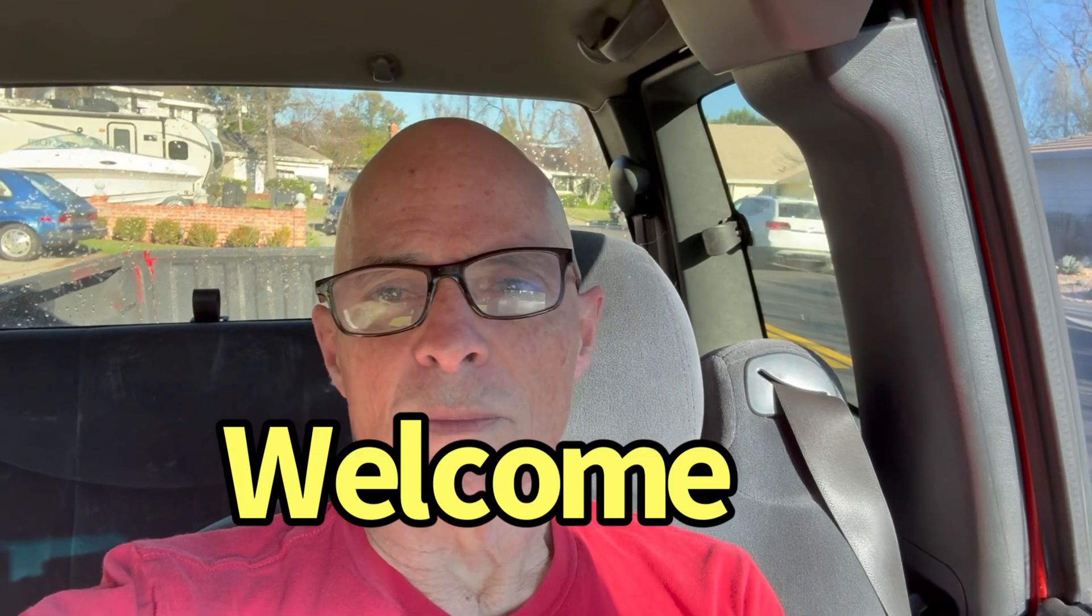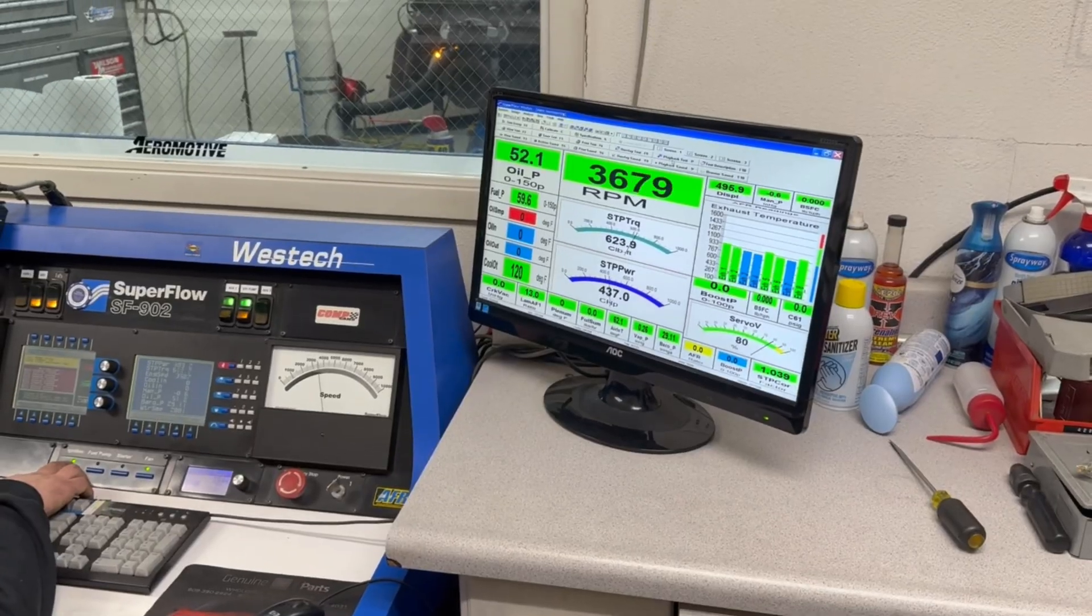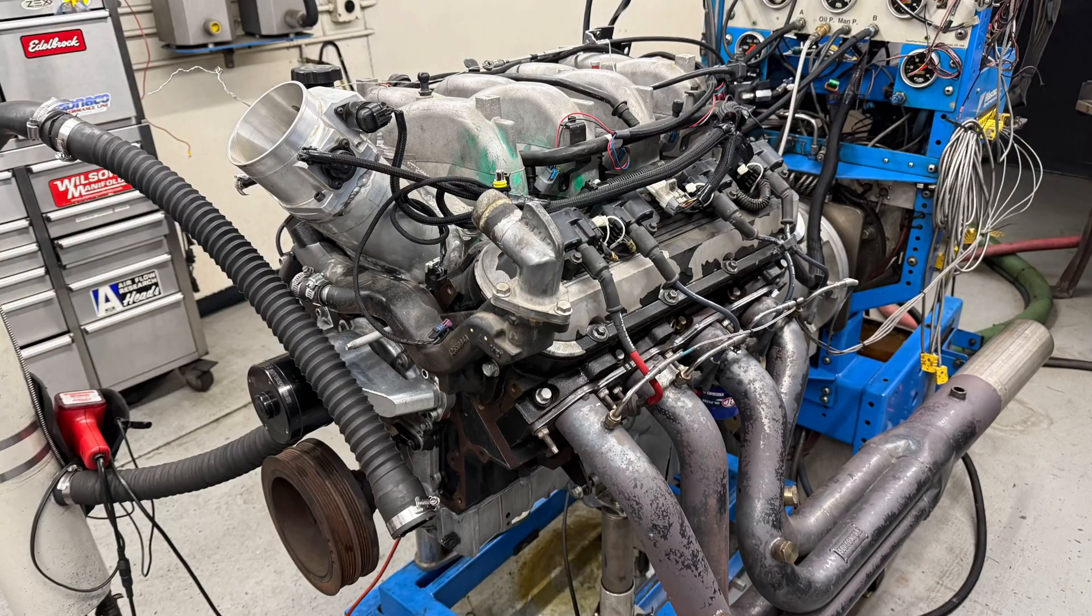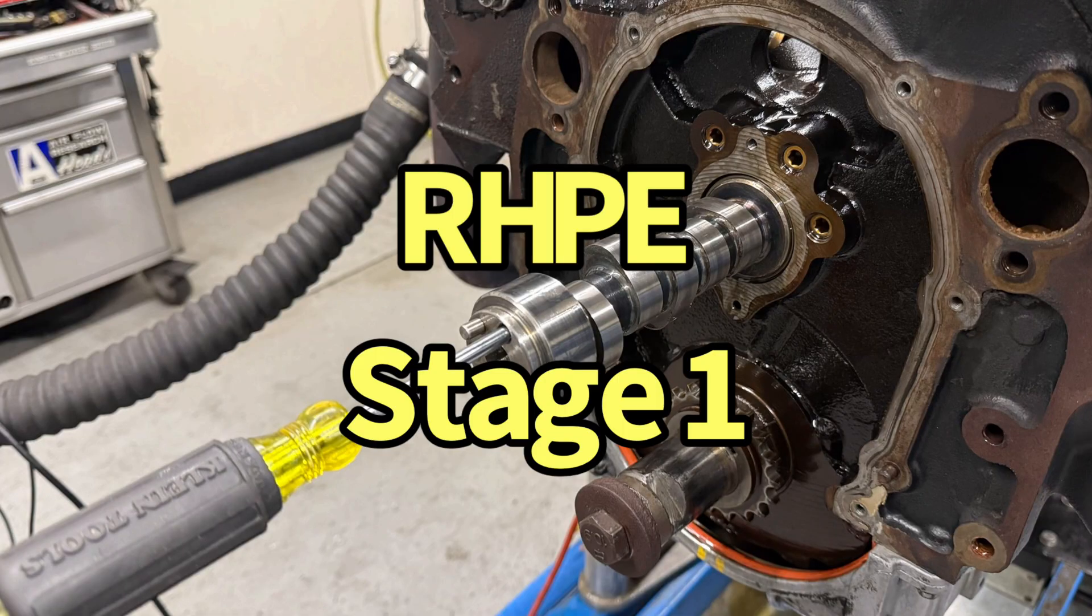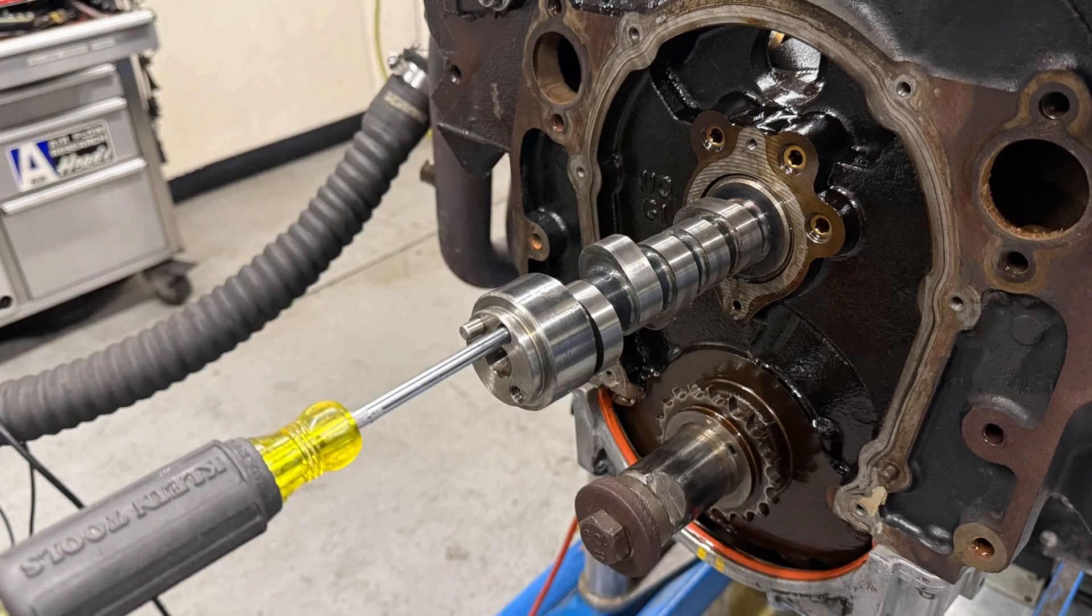Hey guys, Richard Holdener here. Welcome to the channel. Today we're taking a look at dyno testing that I did on an 8.1 liter Gen 7 big block Chevy. We tested a number of different things, one was the new RHP Elgin Stage 1 camshaft, a low buck alternative to the stuff that might already be out there.